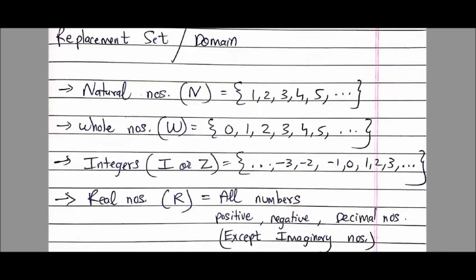Now comes an interesting case: real numbers. Real numbers include all positive numbers, all negative numbers, all integers, and all decimal numbers. To be more precise: all positive and negative integers, all positive and negative decimal numbers, and zero are real numbers — except imaginary numbers, which are in the 11th grade syllabus and not relevant here.